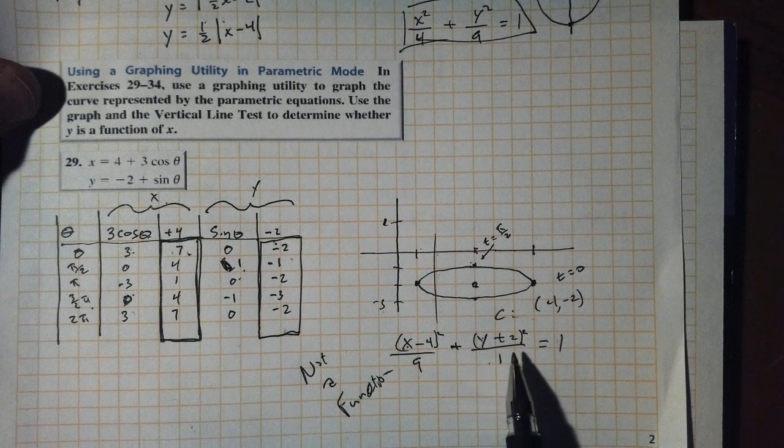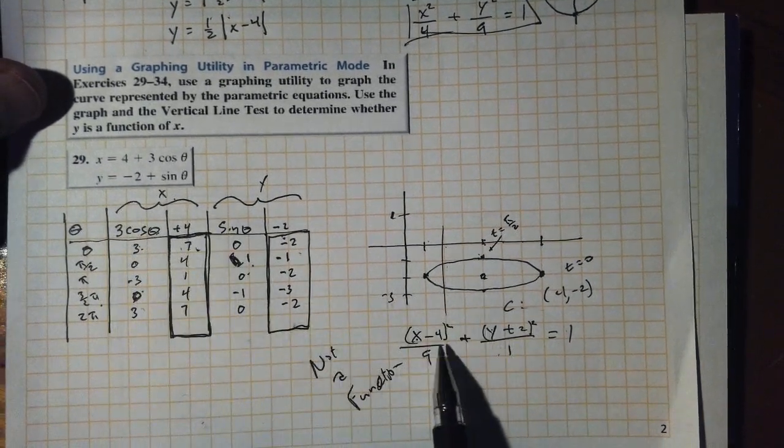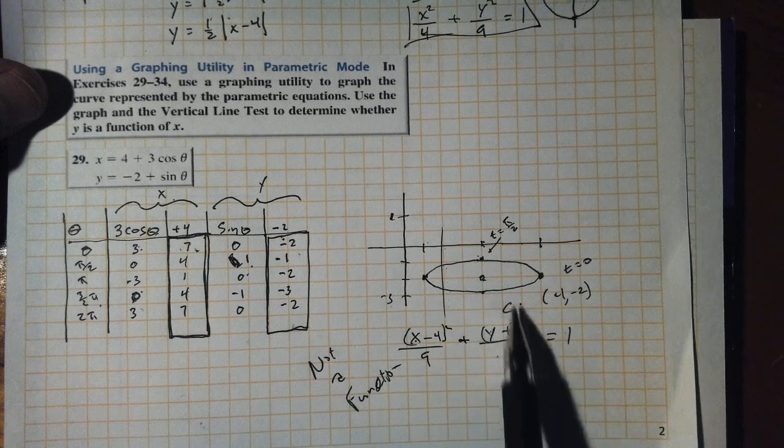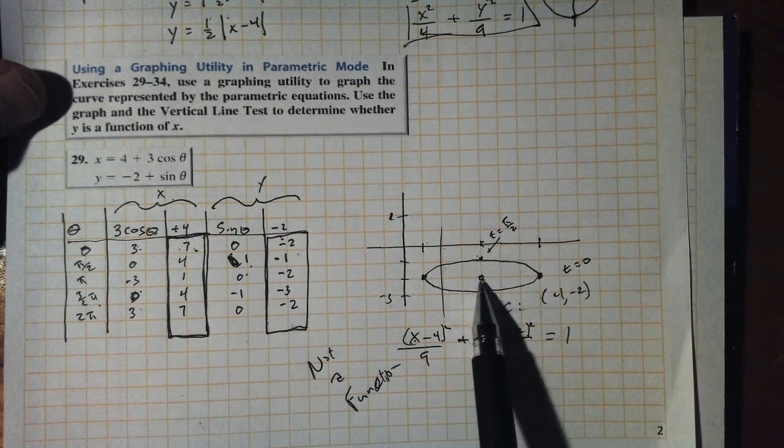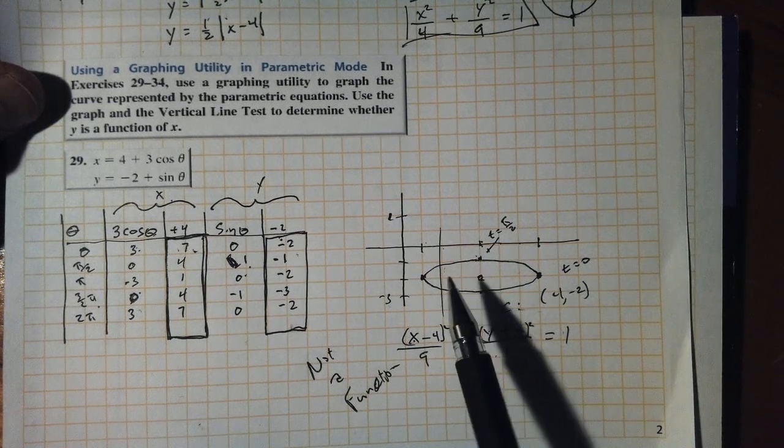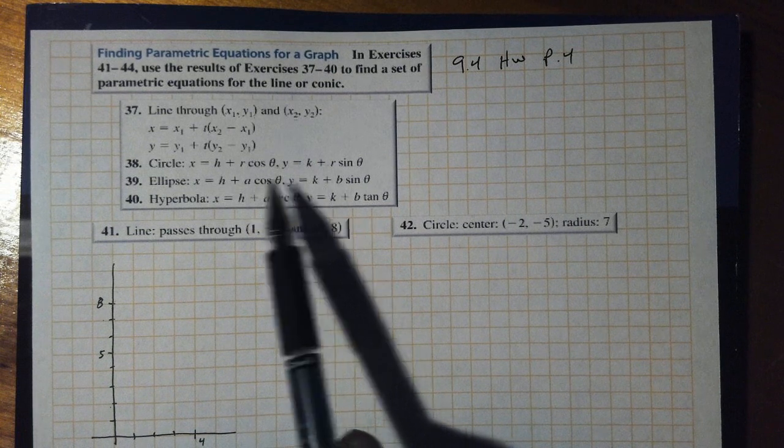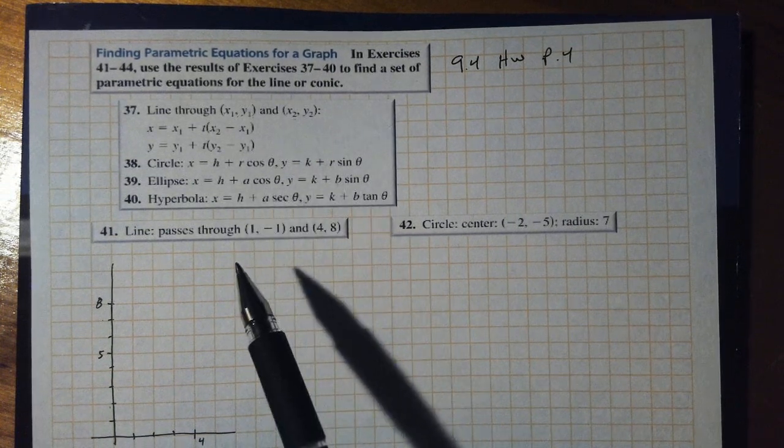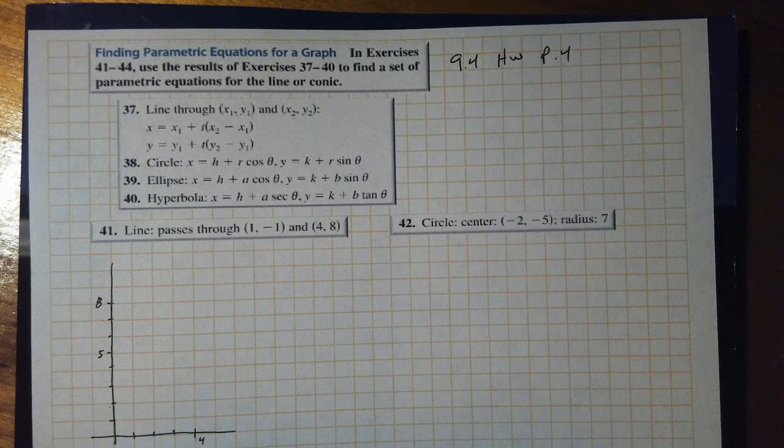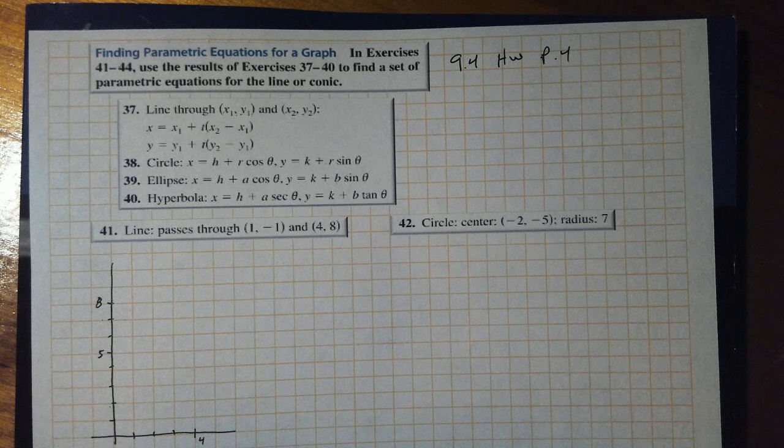What do we need for an ellipse? We need to know the center - back on this problem which we actually graphed parametrically, we know the center is at (4,-2). We need to know a - in this case was 3. We need to know b - in this case was 2. Now they're saying an ellipse you need to know h,k the center, you need to know a, you need to know b, and we just invoke cosine and sine. Same with hyperbola.